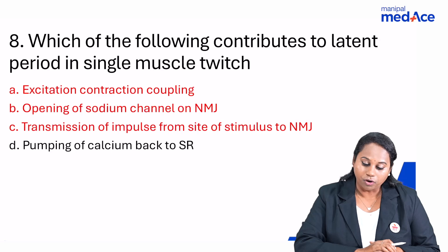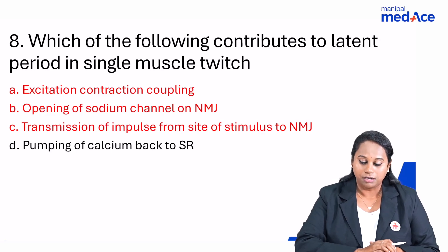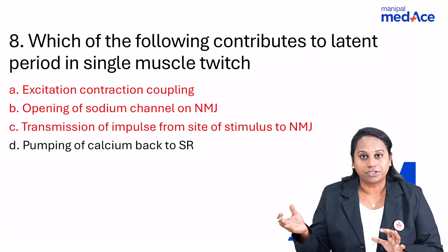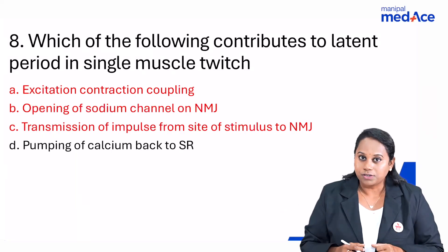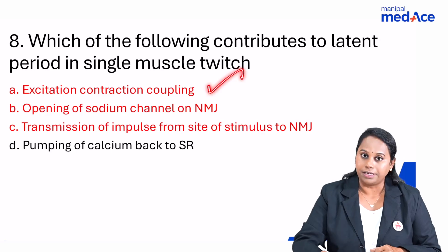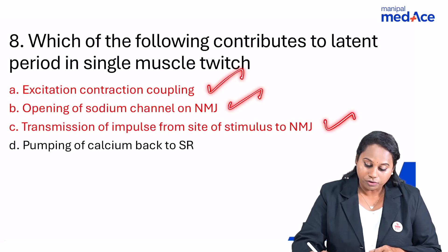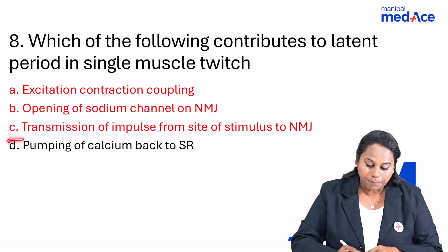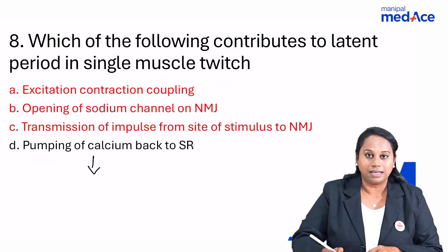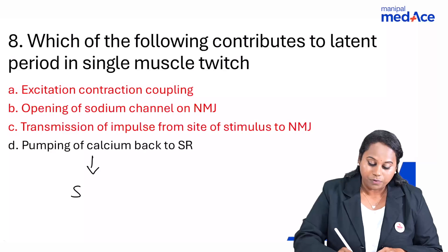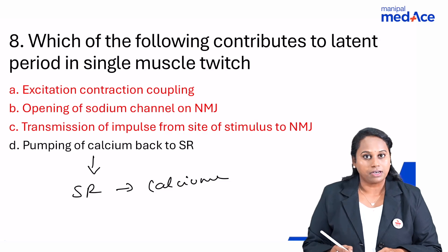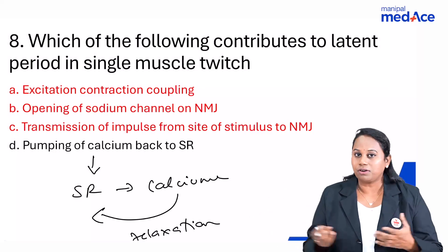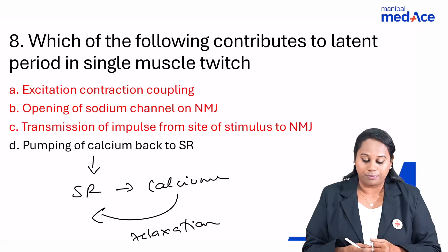Question number 8: which of the following contributes to the latent period in a single muscle twitch? The latent period is from when the stimulus is applied to when contraction begins. During this period: excitation-contraction coupling occurs, sodium channels open, and impulses are transmitted from the stimulus site to the neuromuscular junction. Pumping calcium back into the SR is related to muscle relaxation, not the latent period. So A, B, and C occur during latent period — not D.